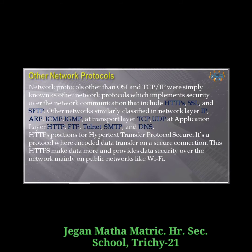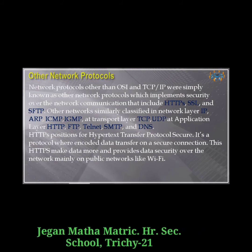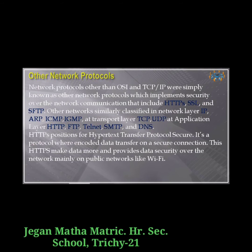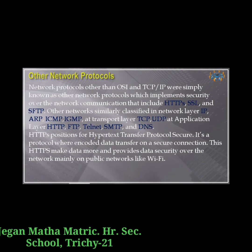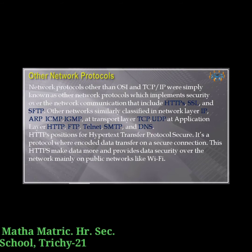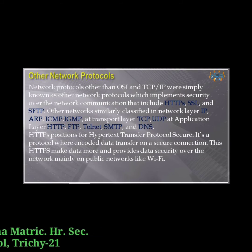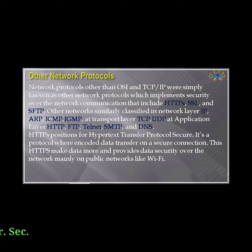At the application layer, we have HTTP, FTP, Telnet, SMTP, and DNS. HTTPS — Hypertext Transfer Protocol Secure — is a protocol where encoded data is transferred on a secure connection. HTTPS makes data more secure and provides data security over the internet, mainly on public networks like Wi-Fi.